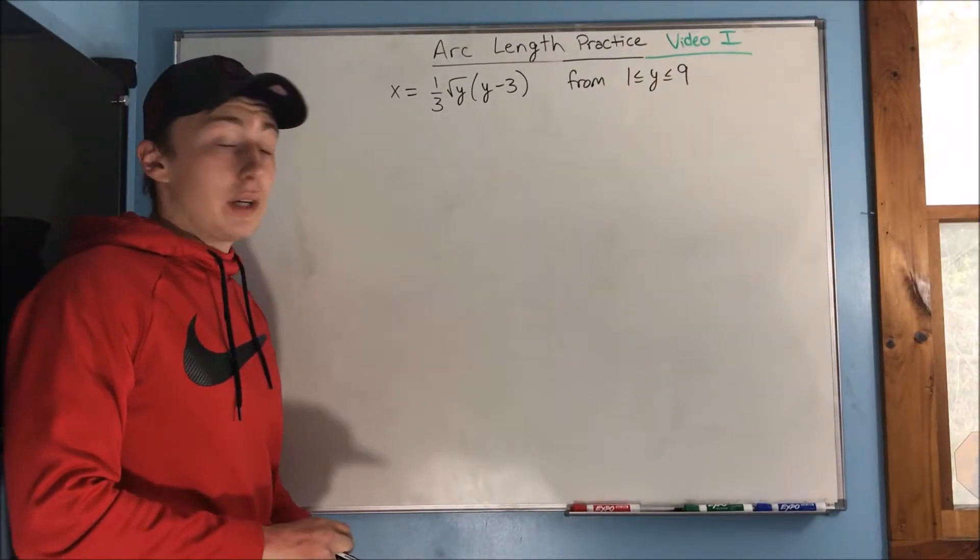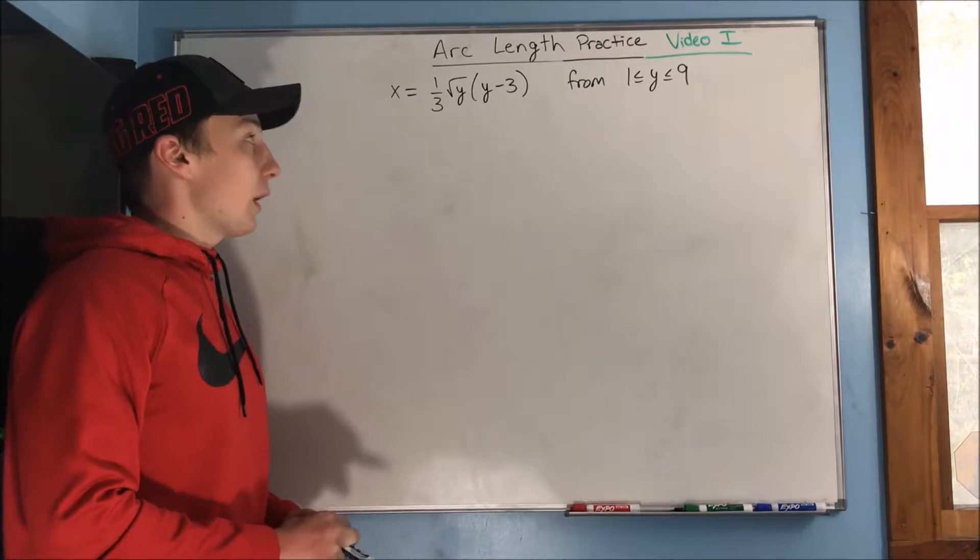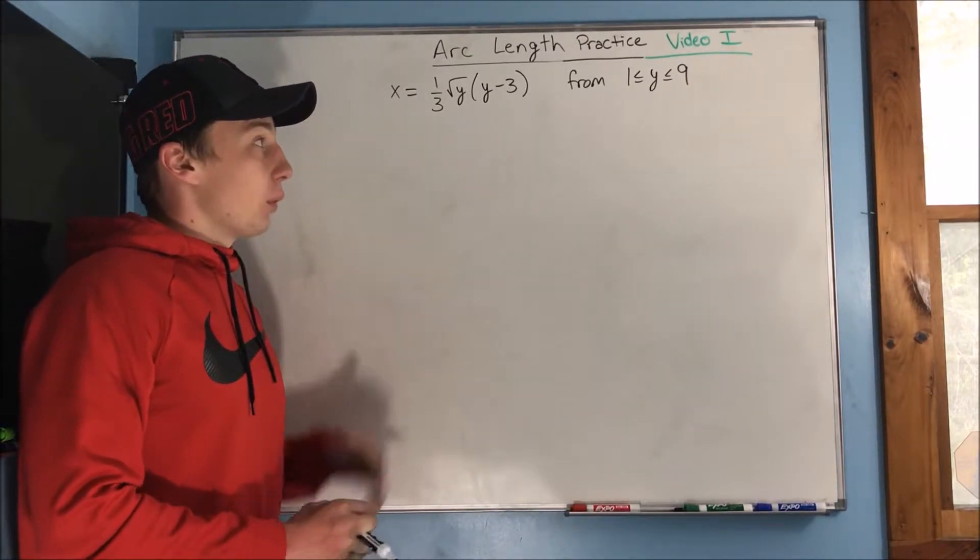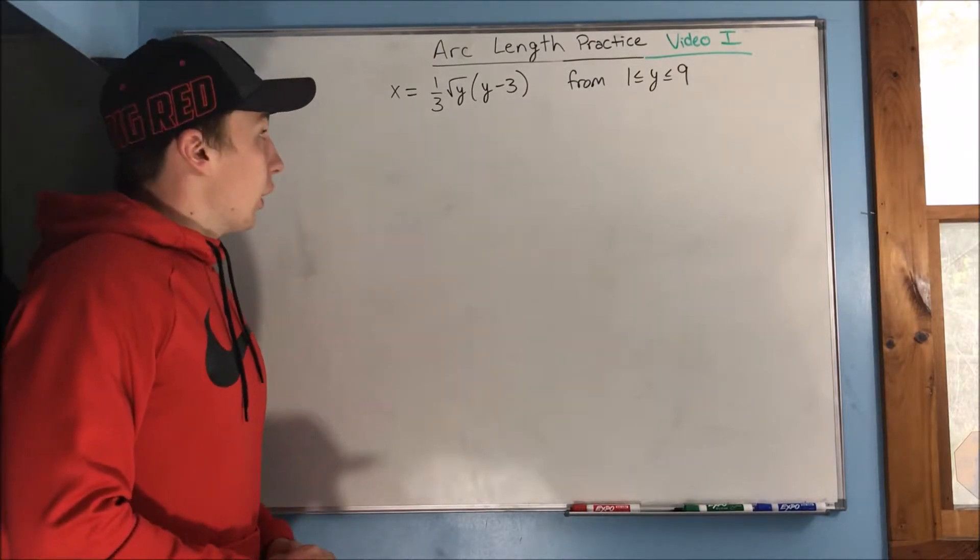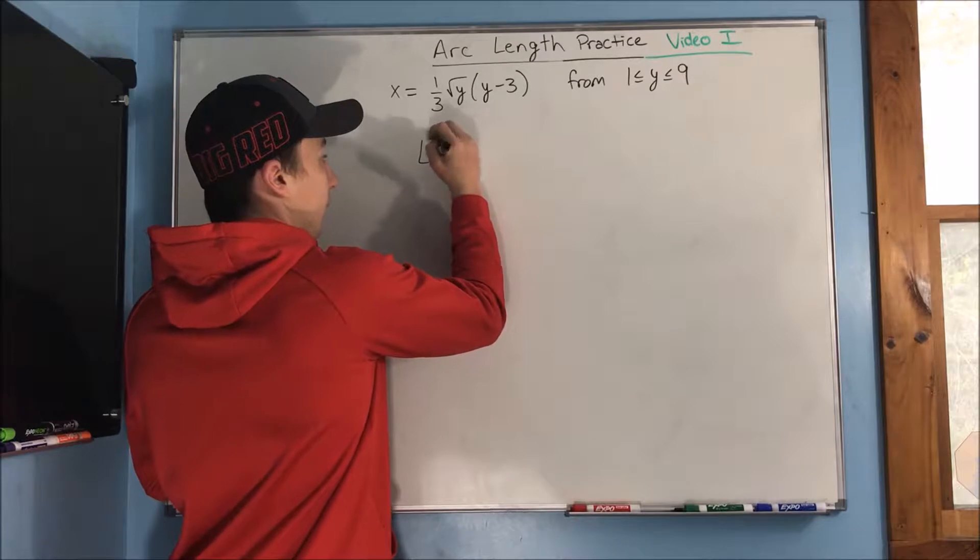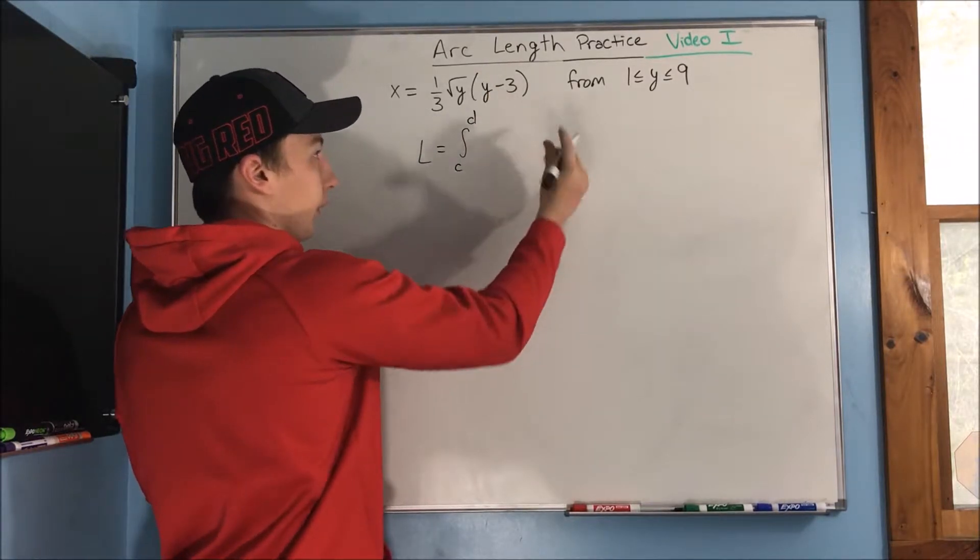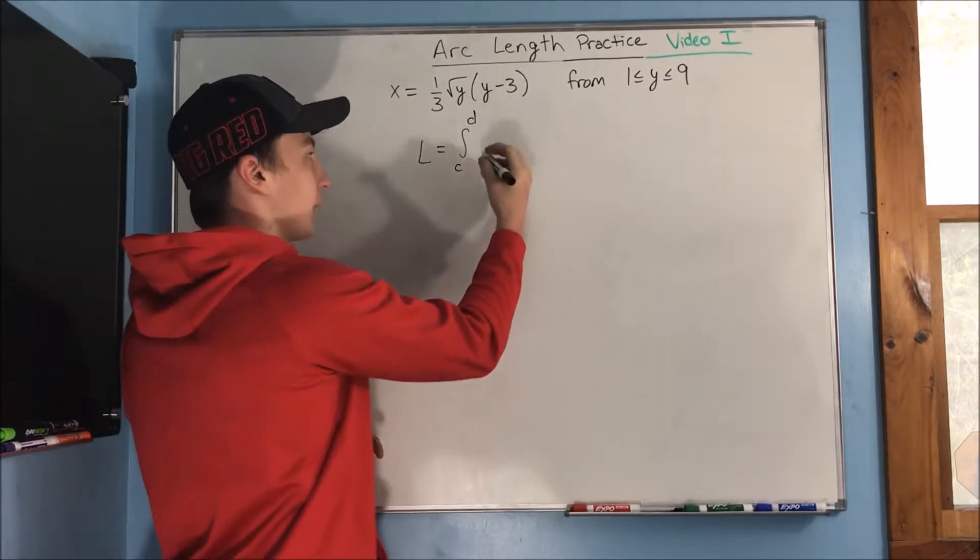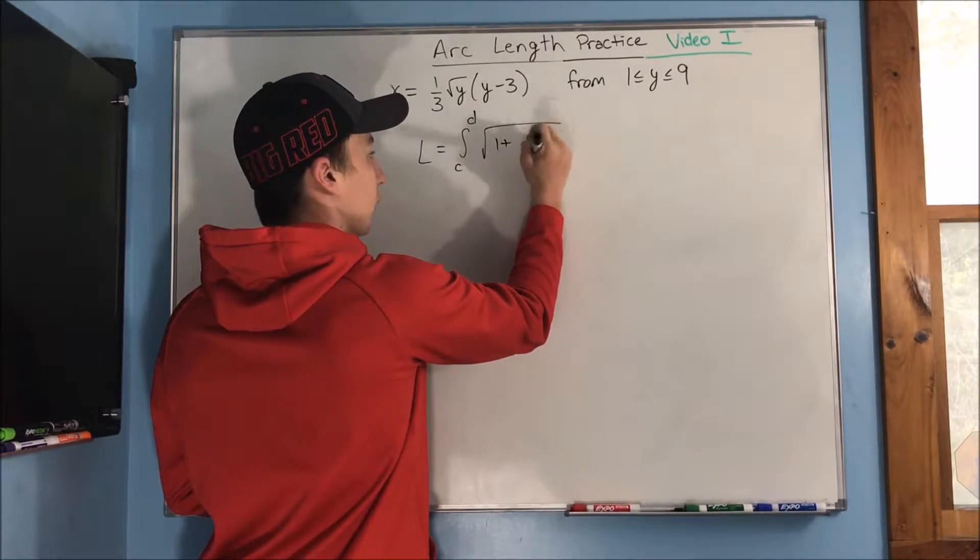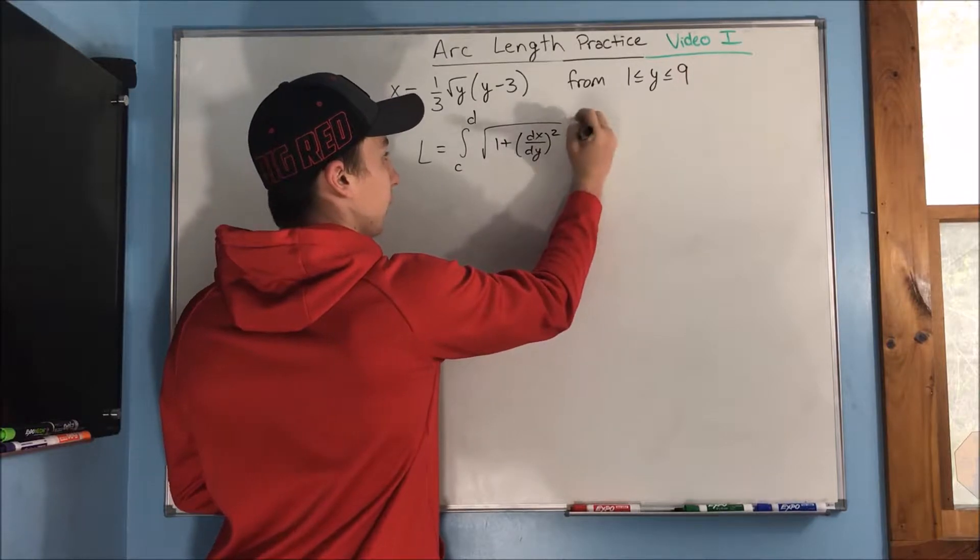So we have our next problem up on the board here. x equals 1 third rad y times y minus 3, and we're trying to find that arc length from 1 to 9. So we can write out our formula. Our formula is going to be different now. It's going to be that the arc length equals the integral from c to d, because we're on the y-axis, right? It's going to be 1 plus dx dy quantity squared dy.